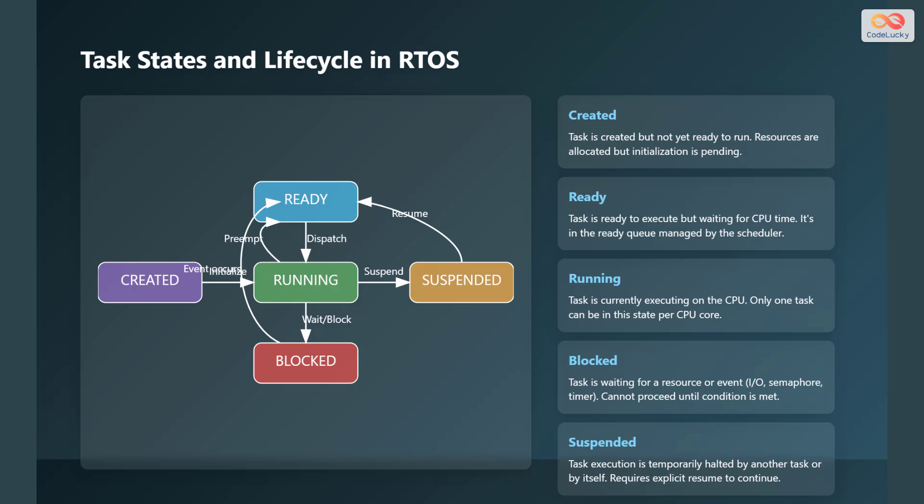Running signifies that the task is currently executing on the CPU — only one task can be in this state per CPU core at any given moment. Blocked is when a task is waiting for a resource or event, such as I/O, a semaphore, or a timer, and it cannot proceed until that condition is met. Lastly, suspended means task execution is temporarily halted by another task or by itself, and requires an explicit resume command to continue.